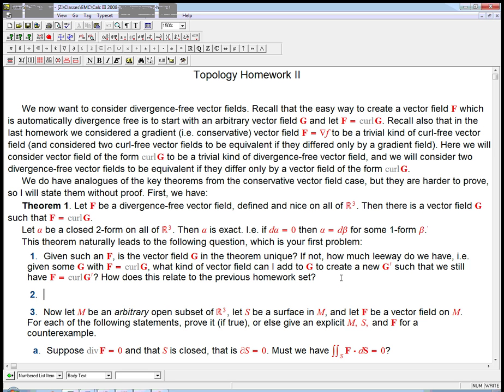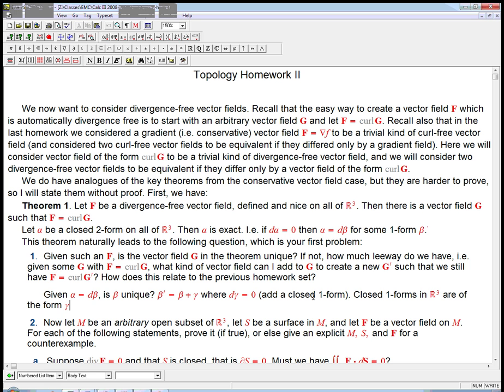So first question, what's the translation of this guy? Given alpha equals d beta, is beta unique? And of course it's not. But we could say, we could change it to beta prime equals, let's say, beta plus gamma, where d gamma equals zero, any closed one form. So we can add a closed one form. Now, closed one forms, those usually, certainly on all of R3.